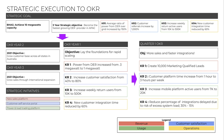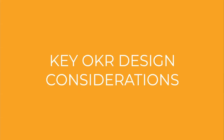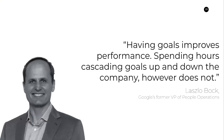That is how we go from the big picture strategy down to the quarterly OKRs and then down to the team level. What I want to touch on is how we do alignment inside a business. Laszlo Bock, Google's former VP of People, said: having goals improves performance; spending hours cascading them up and down and aligning across the business does not.